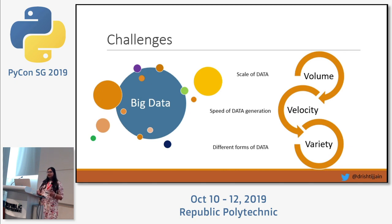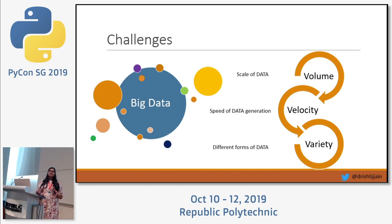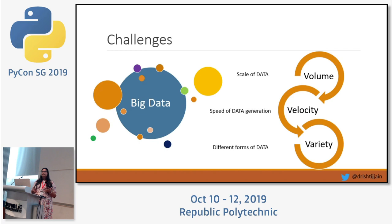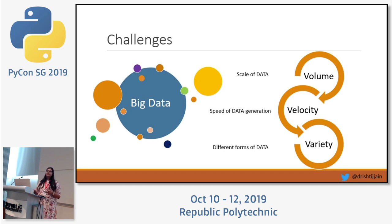The second challenge is velocity — the speed at which data is generated. Each of us uses at least three to four types of gadgets every day, from laptops and computers to mobile phones, smart watches, smart home lights, and voice control assistants. Because of that, the speed at which data is being generated has increased enormously.